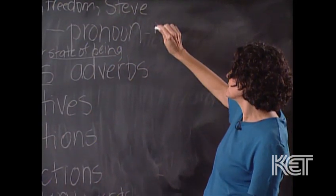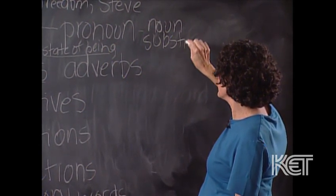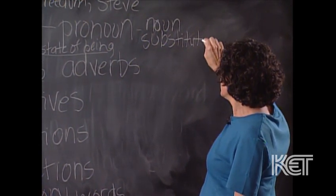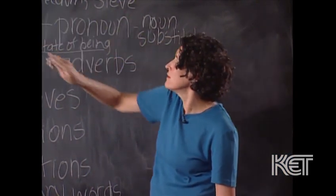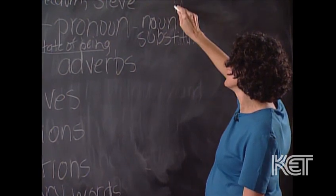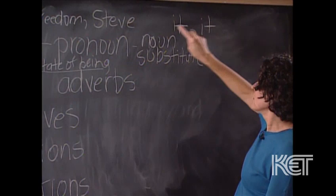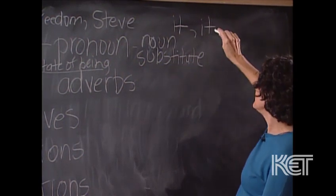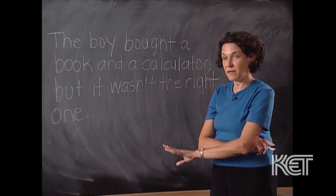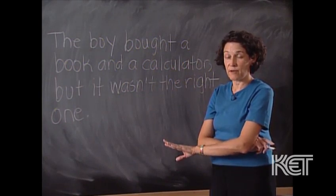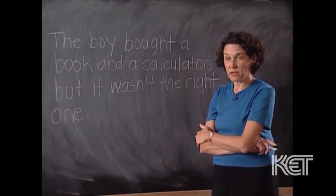Pronouns are noun substitutes — little words that take the place of a noun in a sentence. So the pronoun for 'chair' would be 'it,' and the same for 'freedom.' Steve would be 'he.' You have to make sure you replace the noun with the right pronoun so the reader will understand which noun you're referring to.